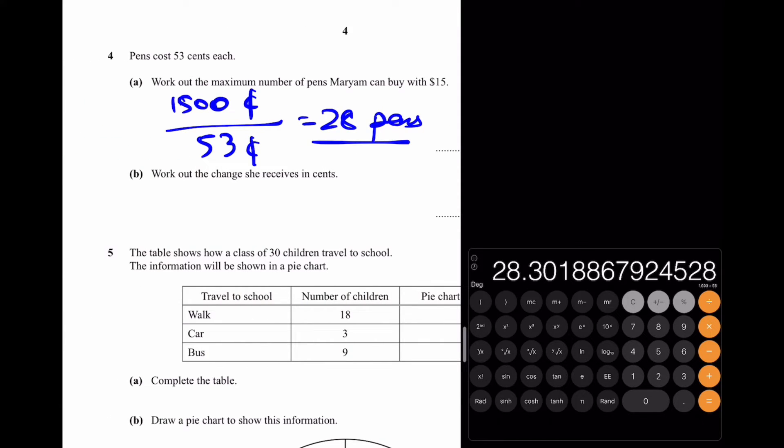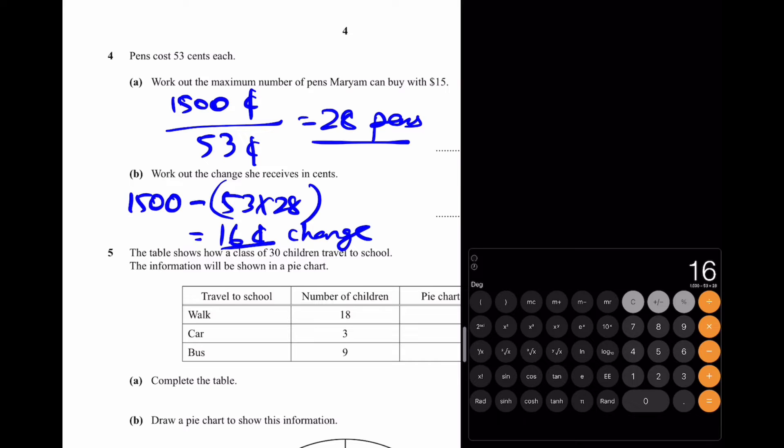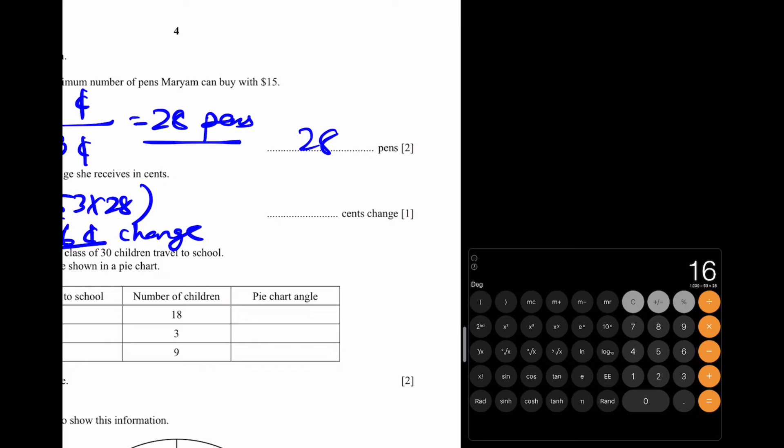Now for part B: Work out the change she receives in cents. Now she buys 28 pens at 53 cents each. How much change does she receive? That'll be 1500 cents minus 53 times 28 since that's the cost used for the pens. Now if you do 1500 minus 53 times 28, that'll be 16 cents change. By the way I've used this symbol a lot. This symbol simply means cents. The answer is 16.